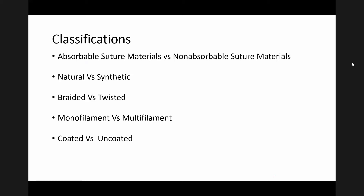There are many ways to classify sutures. Sutures can be classified into absorbable and non-absorbable. They can be natural or synthetic. They may be braided or twisted. They can be monofilament or multifilament. They may be coated or uncoated. These are the most important classification types, though other classifications exist.